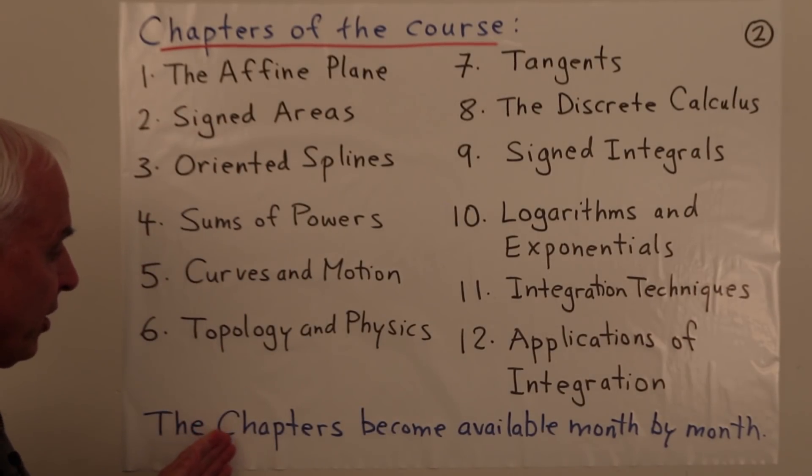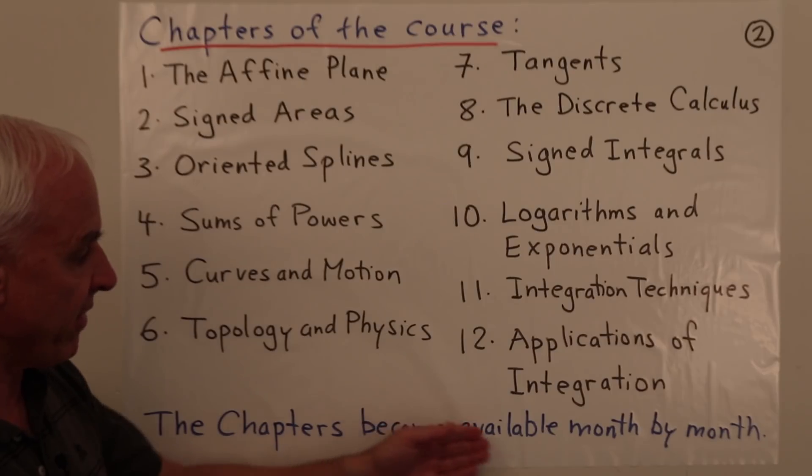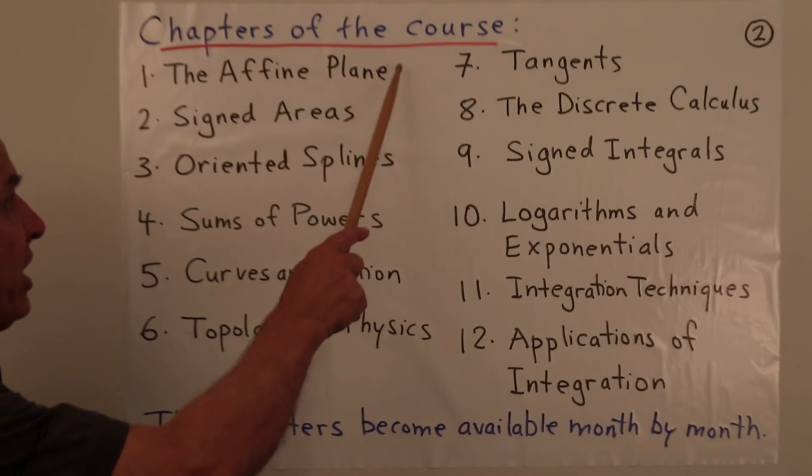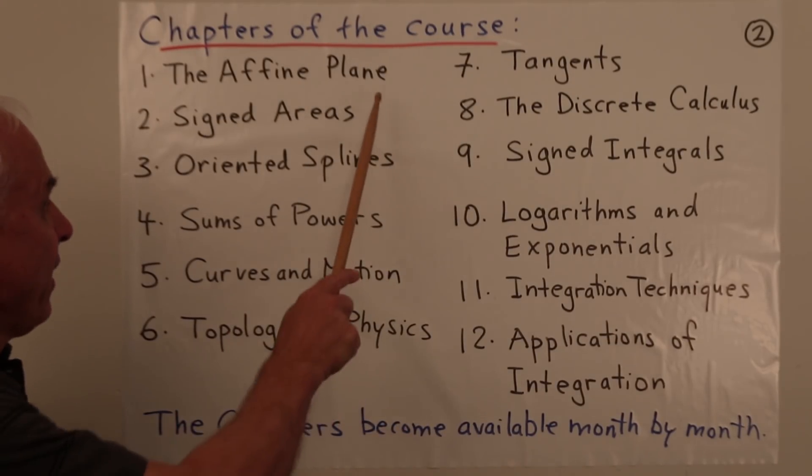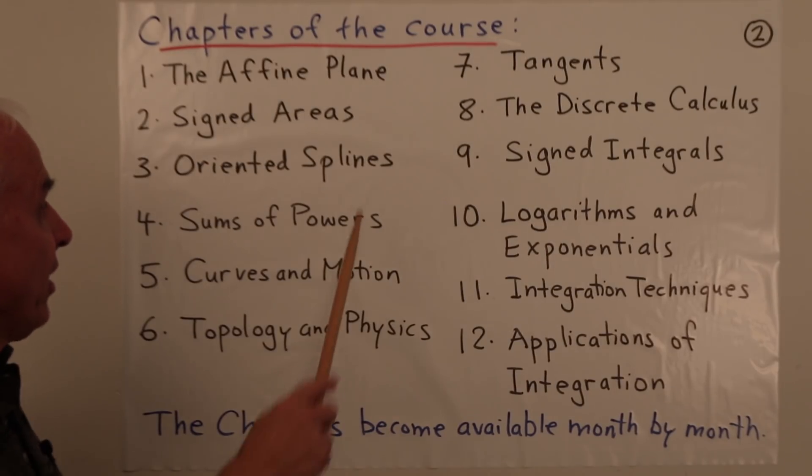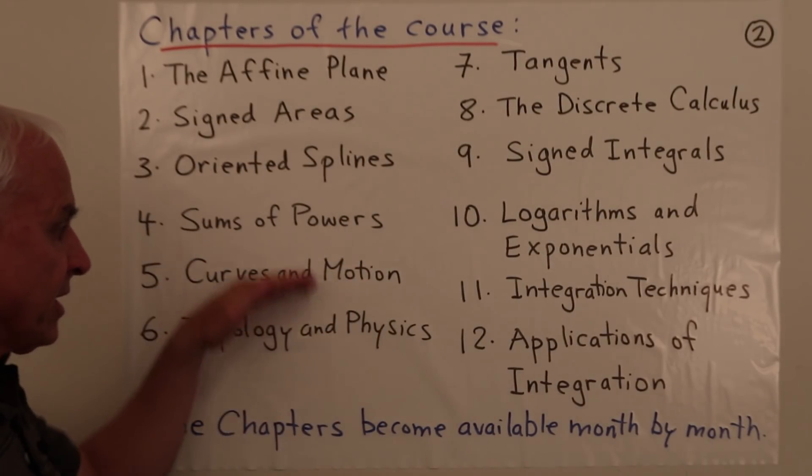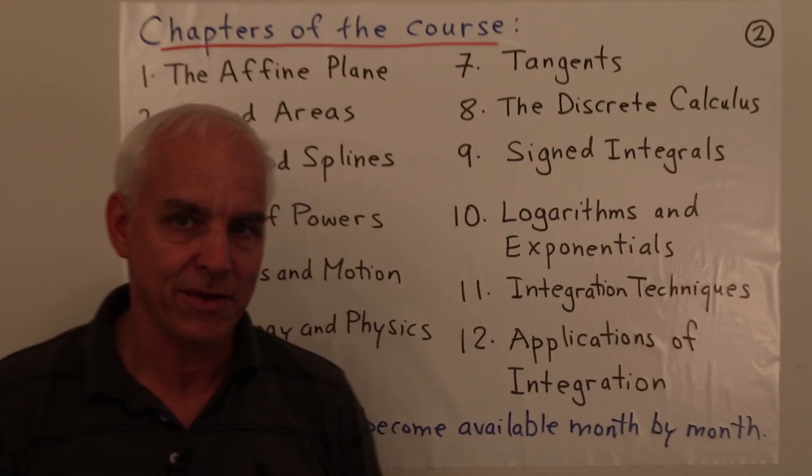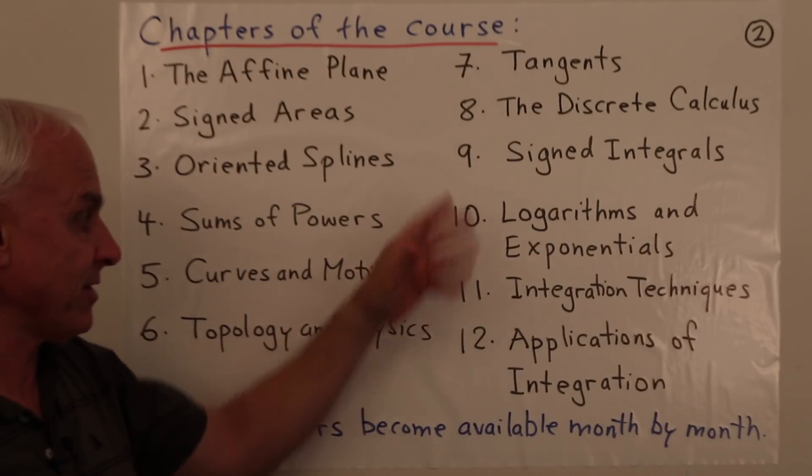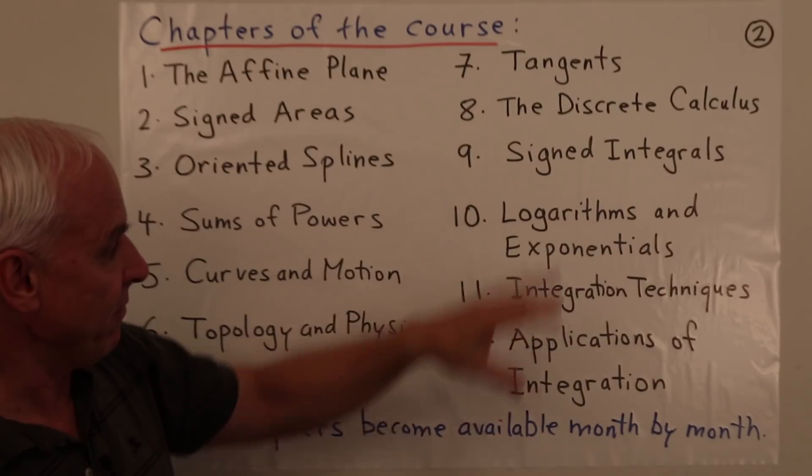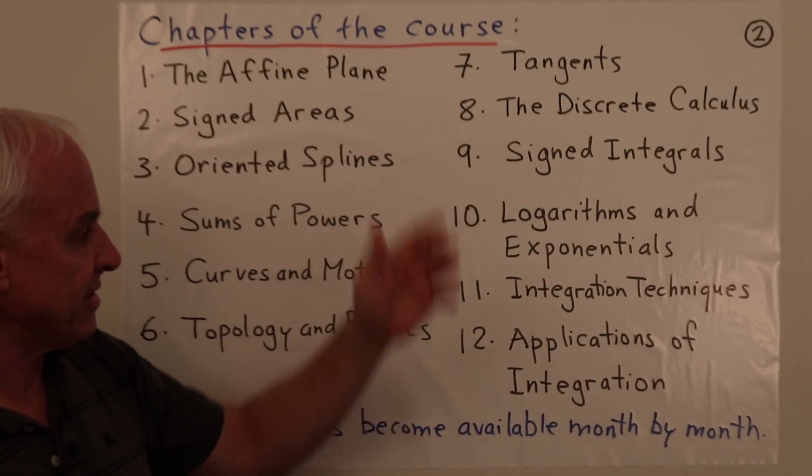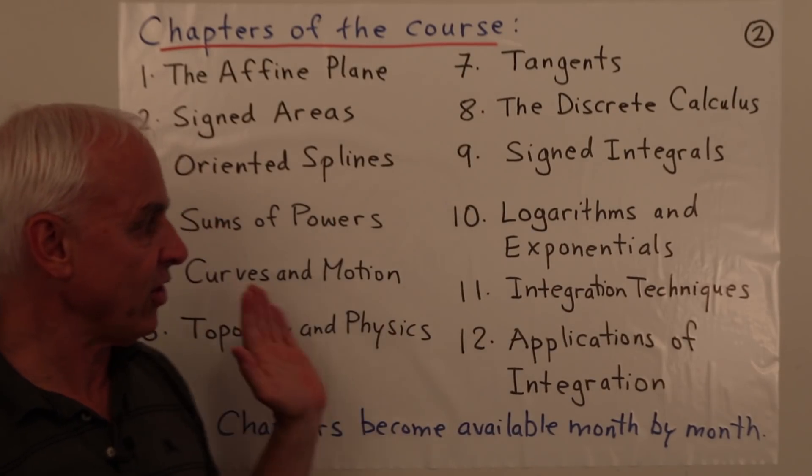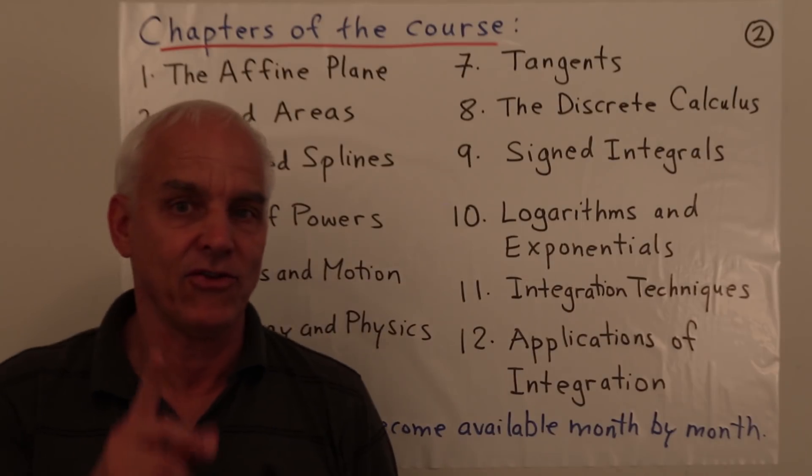We're going to have these chapters become available month by month. So in January you're going to get the affine plane and then in February signed areas and so on. The chapters are going to open up sequentially. Some of them are still in development so it's possible there might be a little bit of movement around. Nothing is set in stone at this stage, but this is the overall general plan.